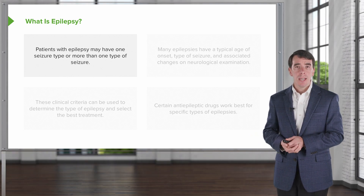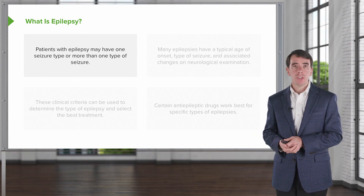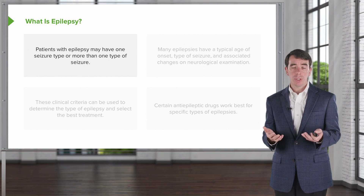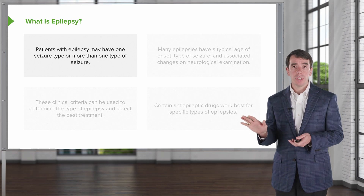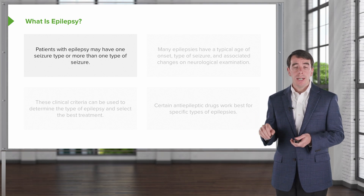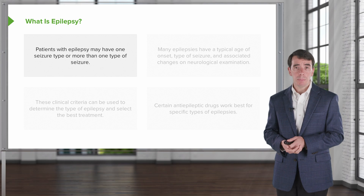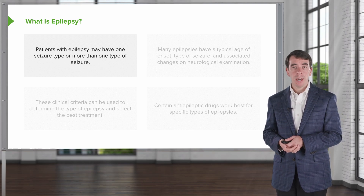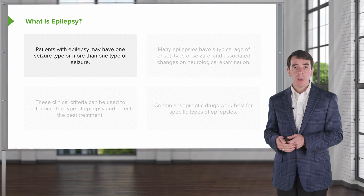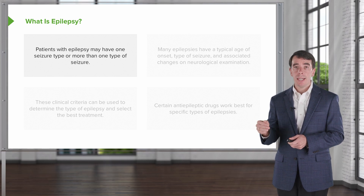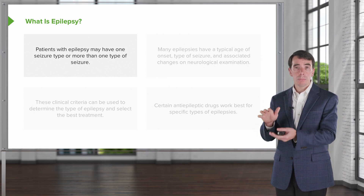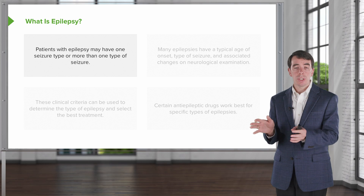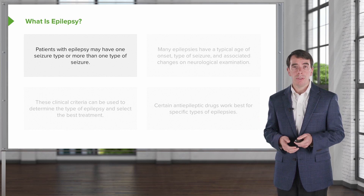Patients with epilepsy may have one seizure type or more than one seizure type. So the seizures we discussed may come in multiples in patients who have epilepsy. Many of our patients who have primary generalized epilepsy will have tonic and atonic or myoclonic seizures — multiple different seizures that occur within their clinical context.